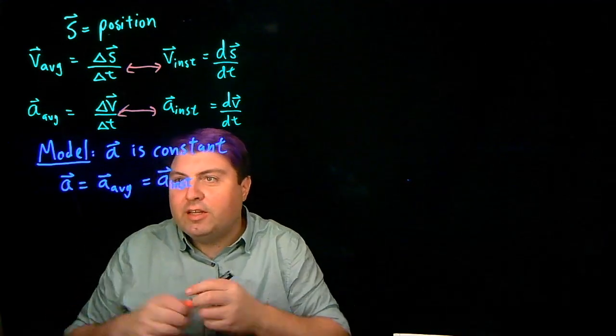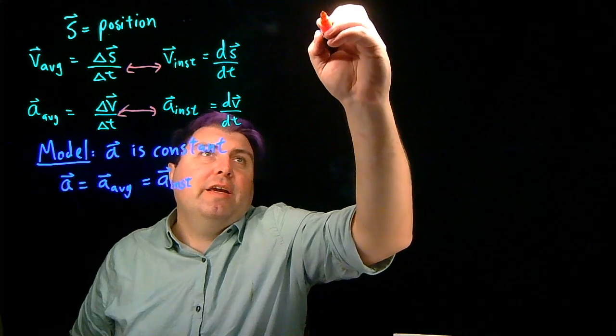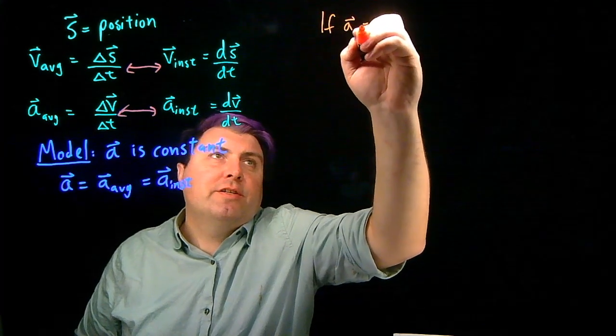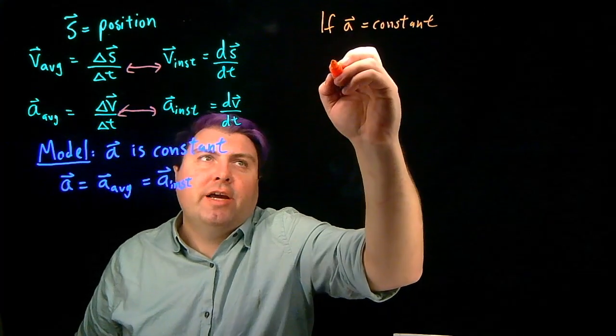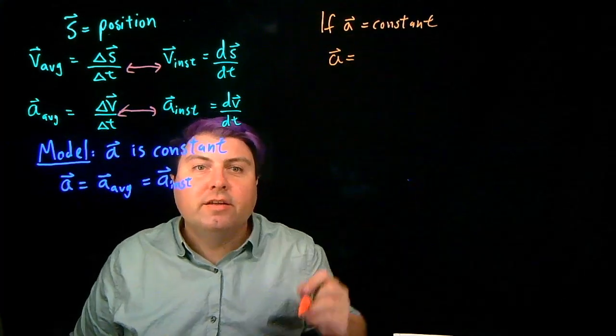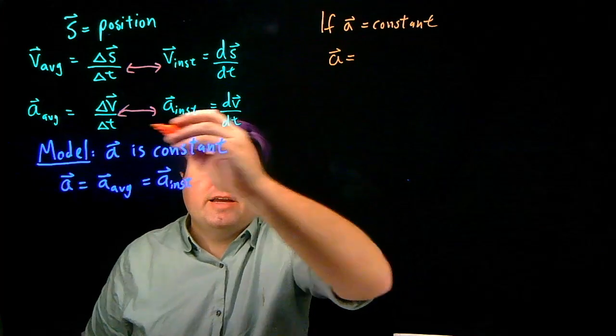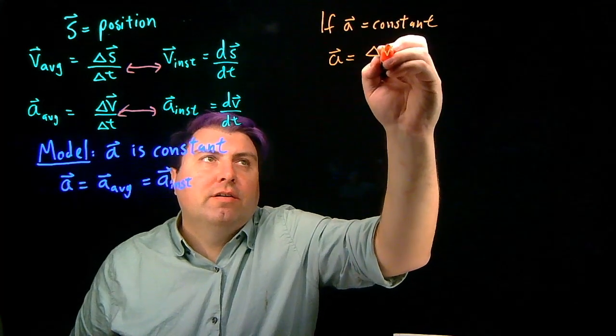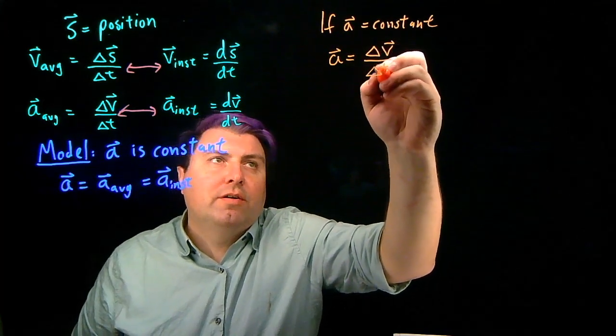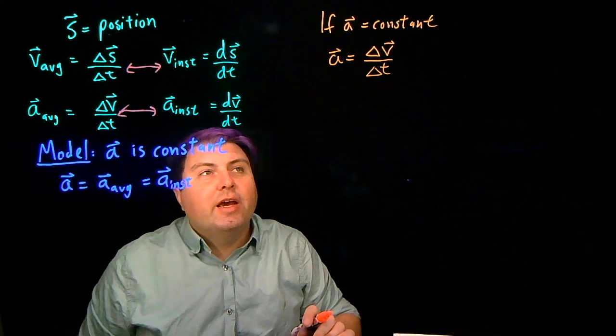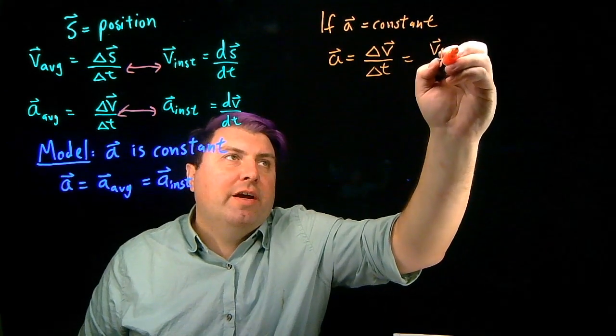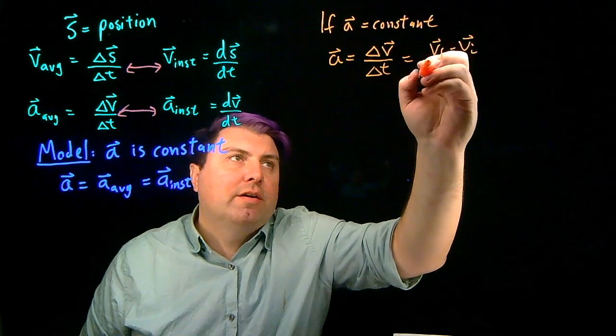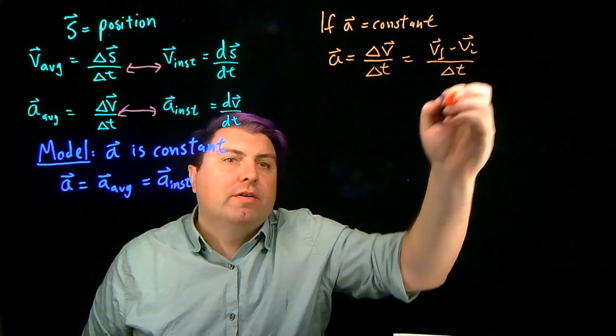So we can then use this. And again, if our acceleration is constant, then instead of writing a average, I can just write a. And then I can write it as delta v over delta t. And I can write my delta v as vf minus vi over delta t.